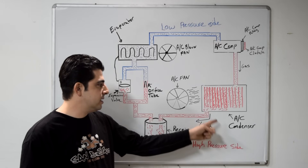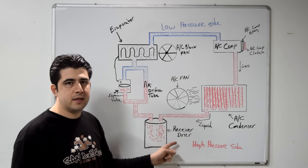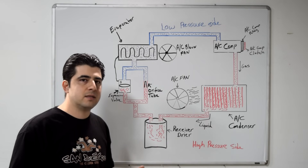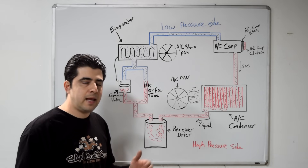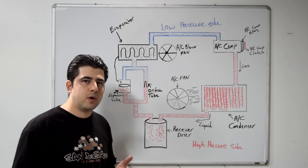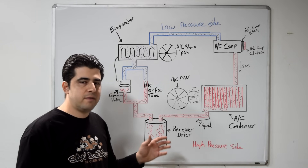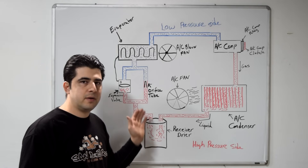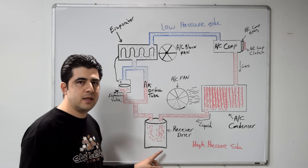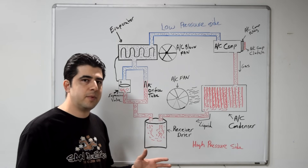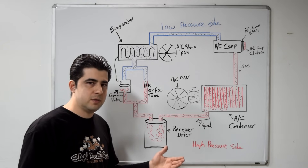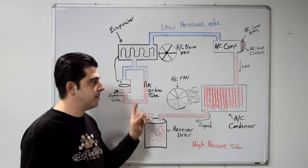As the refrigerant leaves our AC condenser in a liquid state, it travels to a receiver dryer. The job of the receiver dryer is to remove contaminants and moisture from your AC system, because both of those things can damage different components or make the system not work properly. If you ever do any kind of repair on your AC system, you definitely need to replace your receiver dryer — if it's been exposed to atmospheric pressure for a long period of time, it loses efficiency and cannot be reused.